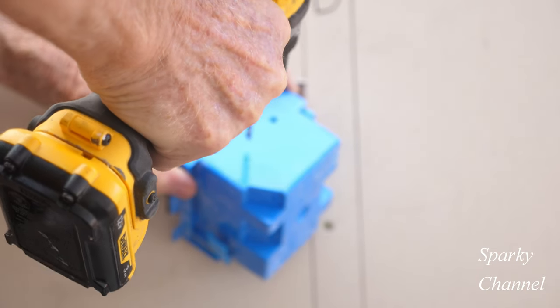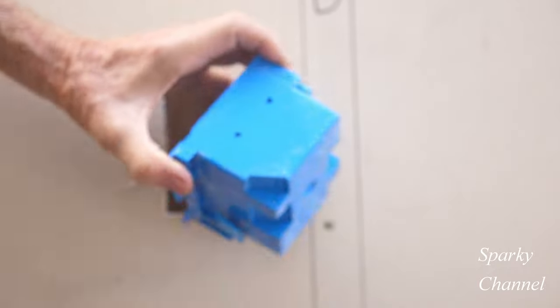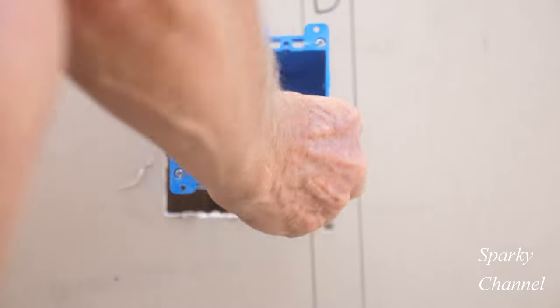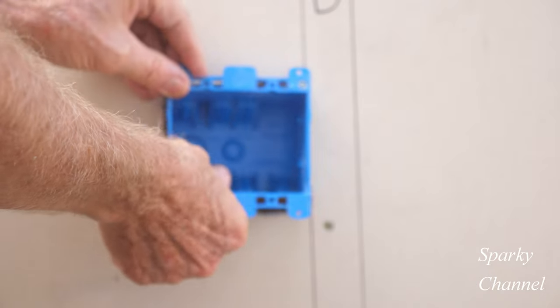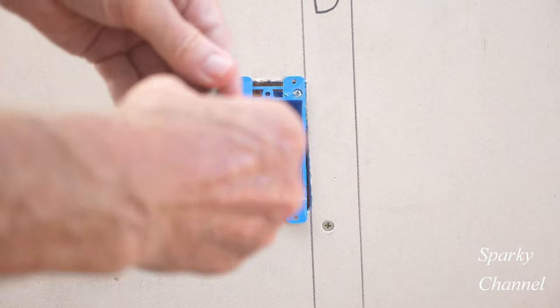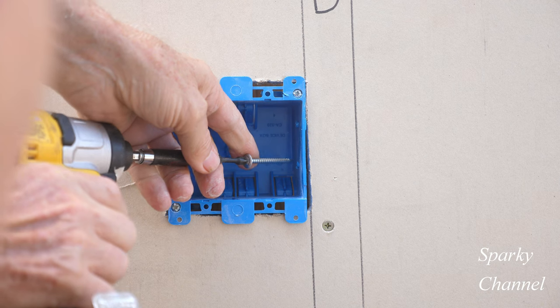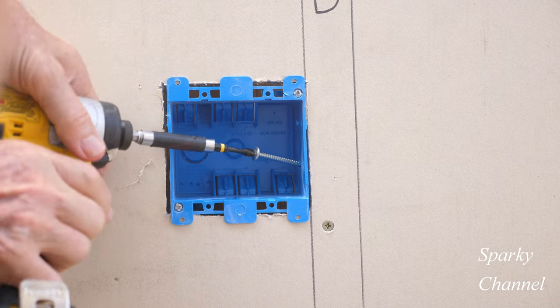Is it okay to take a Carlon old work box, in this case it's a two gang box, and drill a couple holes in the box and then use some screws and screw that box right into the stud, say two screws, and then tighten up the wings so you have a nice secure installation.